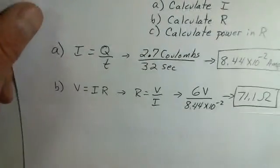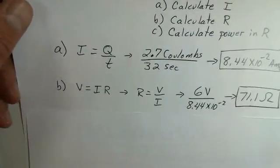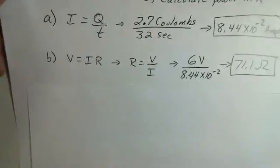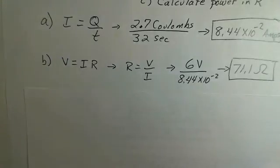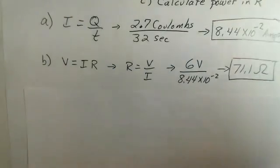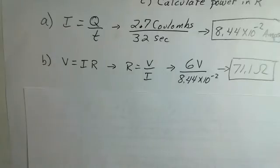What's the resistance? Well, Ohm's law tells us V equals I times R. So R equals V over I. We know we're dealing with a 6 volt situation over 8.44 times 10 to the minus 2 amps, producing 71.1 ohms.